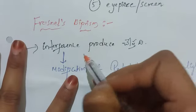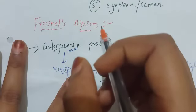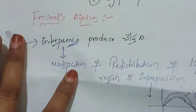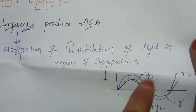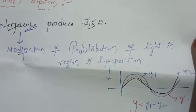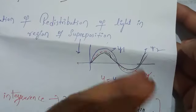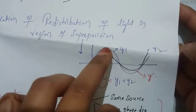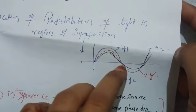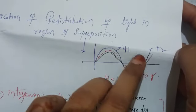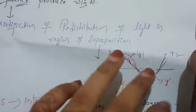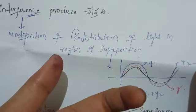So Fresnel's biprism — this is the basic answer. Interference produces — the interference pattern is used to produce. So interference is nothing but the modification of light distribution in the region of superposition. In the region of superposition, the intensity of light is redistributed. There are two waves that are superimposed, y1 and y2, and the resultant wave is produced.